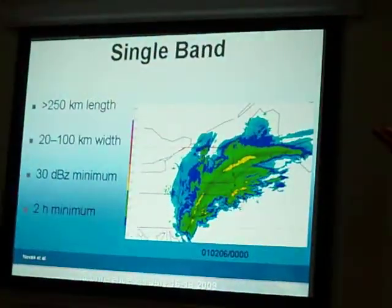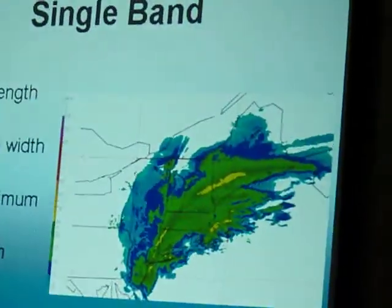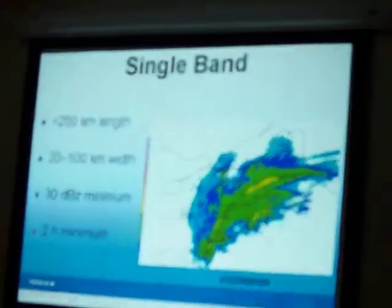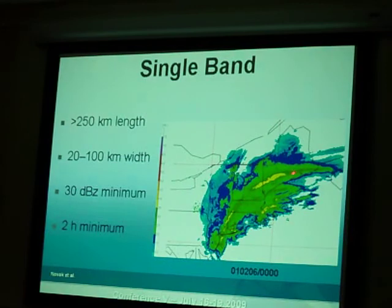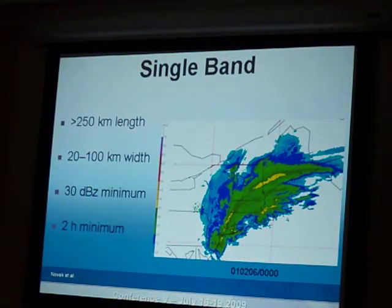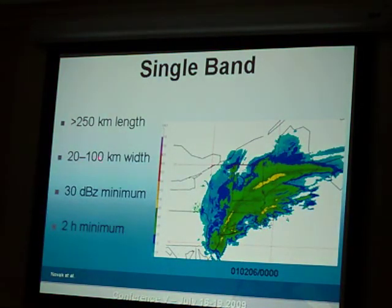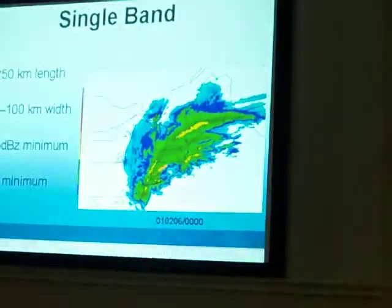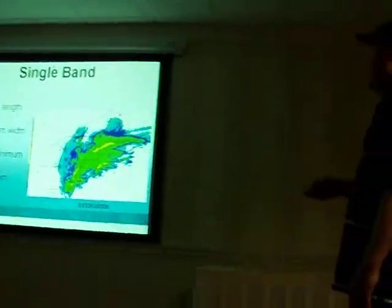Mostly what we want to talk about here are single bands. You can have banding that takes the shape of multiple bands — maybe two or three — but what we want to focus on are these big long bands that produce snowfall rates of two to four inches an hour. They're generally greater than 250 kilometers in length, and they can be very skinny — a lot of times less than 100 kilometers, down towards 20 kilometers or so. 30 dBZ minimum, though a lot of times in these bands you'll see at least 35 to 40 dBZ. And they last at least two hours, but mesoscale snow bands don't last on the order of days — they last on the order of hours, and we'll show why.